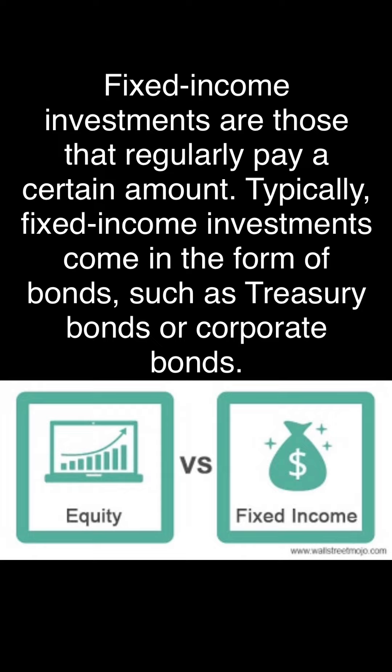When we talk about fixed income investments, we're usually talking about things that pay a certain amount regularly — forms like bonds, certificates of deposit, and things of that nature. You've probably heard a lot of discussion about the 10-year note, or yields spiking as the market has been volatile. That's because money is starting to rotate out of equities into fixed income investments. When yields spike, that's usually because a rotation of money is coming out of equity into fixed income.